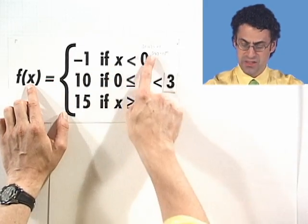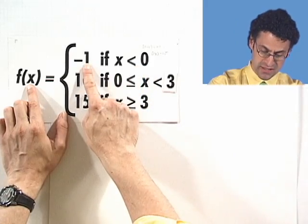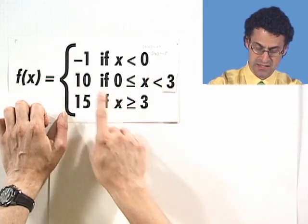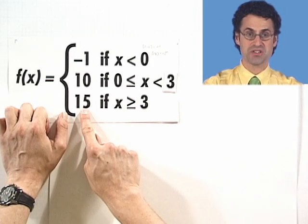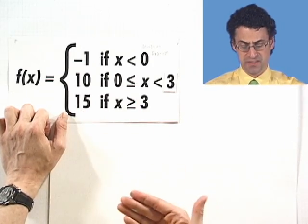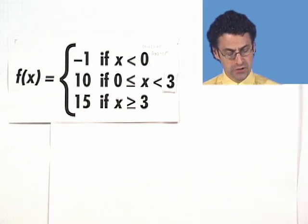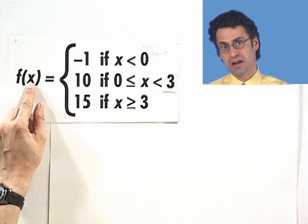So if x is in this region, then the function is this. If x is in this region, the function is this. If x is in this region, the function is this. So basically, you can think of this sort of like a computer program. You input x, and to figure out the output,